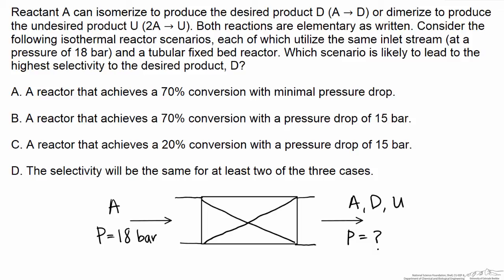Fixed bed reactor systems will often be shown as a tubular reactor with this X in the middle, and this corresponds to the catalyst bed. We are given that the inlet pressure of this gas phase reactant A is 18 bar.